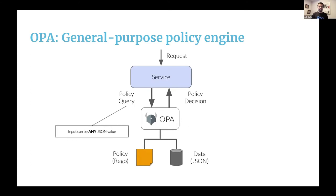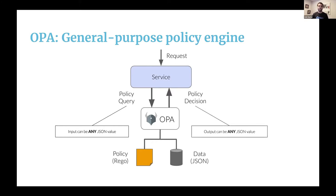The policy query itself can be any JSON value. You can give OPA the HTTP request method, path, and user if you're doing HTTP API authorization. If you're doing admission control, you can give OPA the entire pod manifest. Give it some kind of structured data, and OPA returns a policy decision — again a JSON value — back to your service for enforcement.